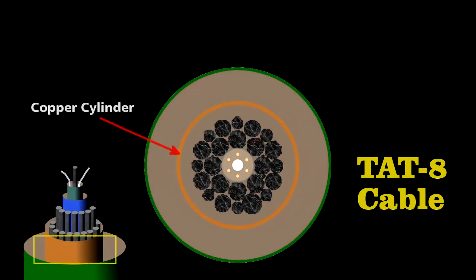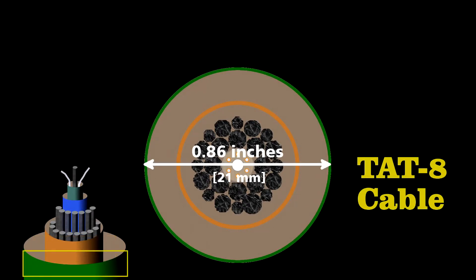surround it with steel strands, and then sealed it inside a copper cylinder to protect it from water. The final cable was less than an inch in diameter, yet it could handle some 40,000 simultaneous phone calls.